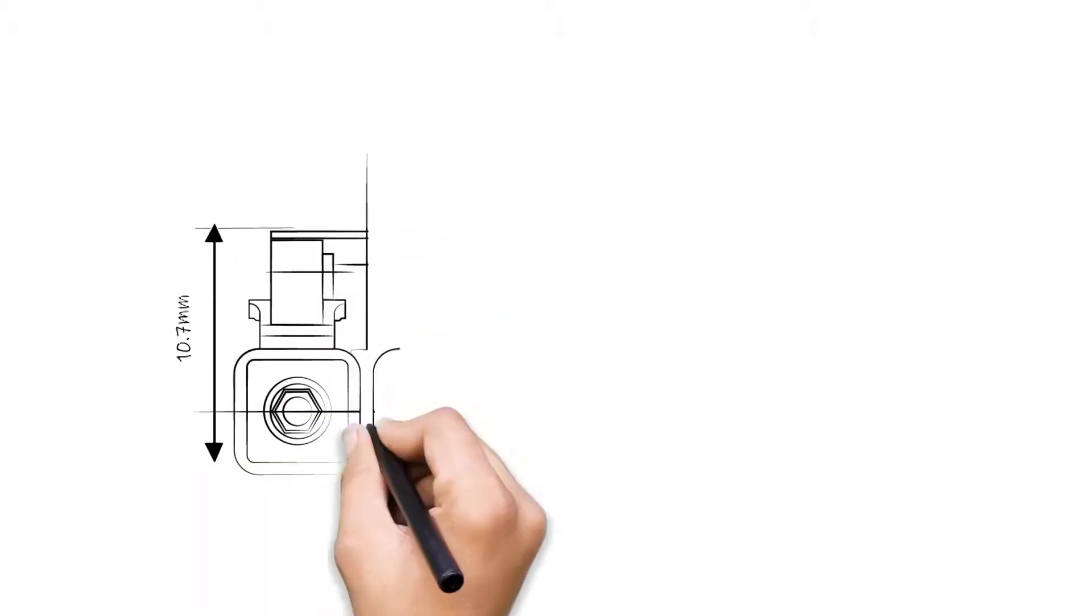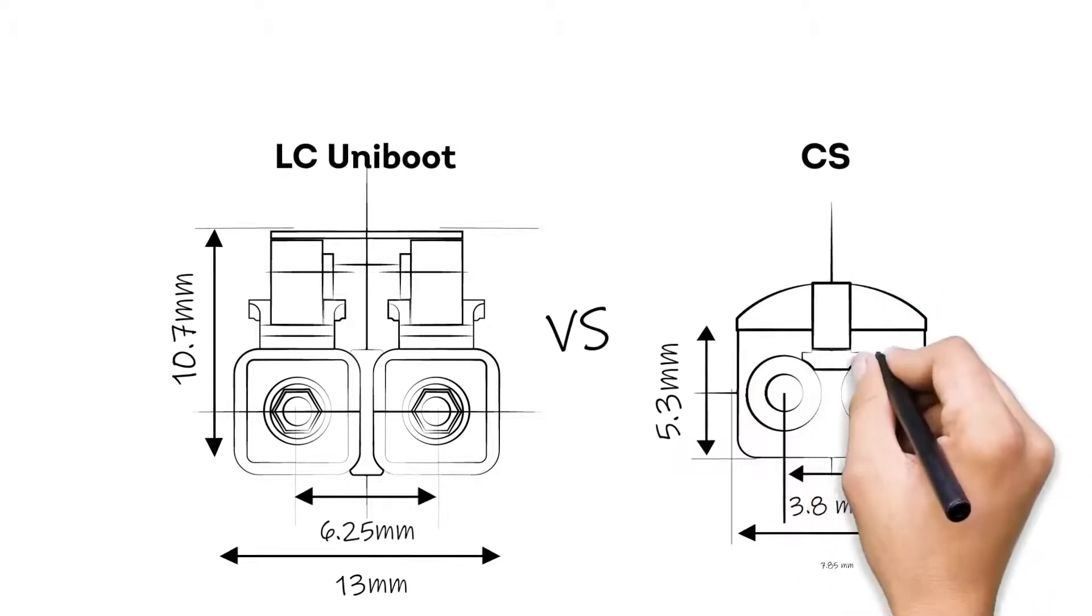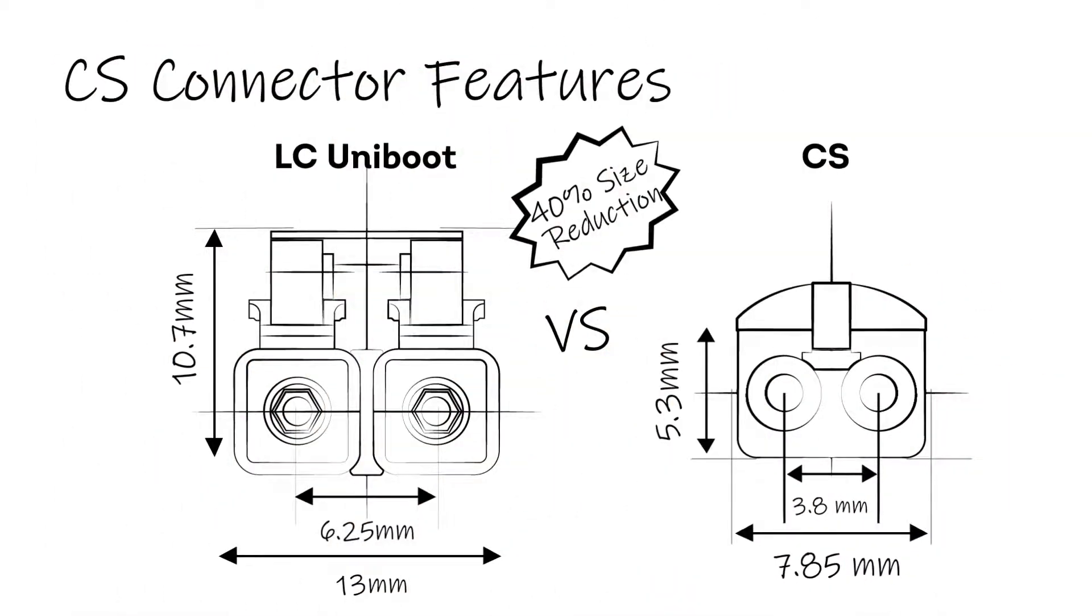Comparing to the LC connector, which is known as a small form factor connector, the CS connector is even smaller. So, it falls into the category of ultra-small form factor connectors. As a size comparison, compared to the LC connector, the CS connector gives a 40% reduction in size.